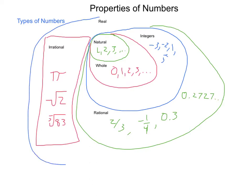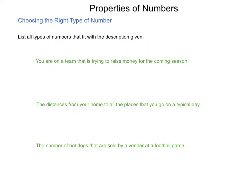And all of these together are encompassed inside of the group of the real numbers. There are numbers that we will study that are not real, but this is the basic set that we're going to work from. So, as we have these real numbers, we have to think of what types of items that we talk about fall within each realm. So, let's look at some examples. Choosing the right type of number. List all types of numbers that fit with the description given.